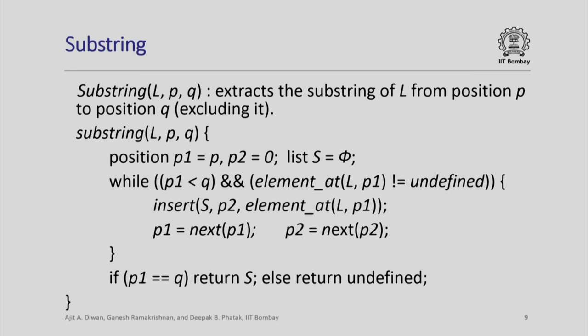If p was greater than q then the substring is not defined at all and we will not insert anything into the list s. Similarly, if the position q specified is after the end of list l, at some point the element at position p1 in l will be undefined and we will not consider it a proper substring. Only when p1 becomes equal to q do we return the substring s. Here we are essentially using the already-defined operations on lists rather than the standard approach of examining the empty list and push.